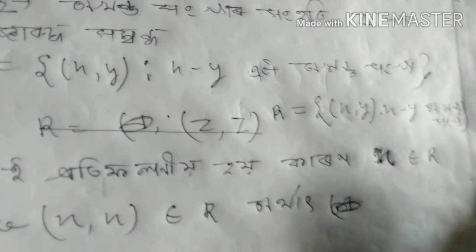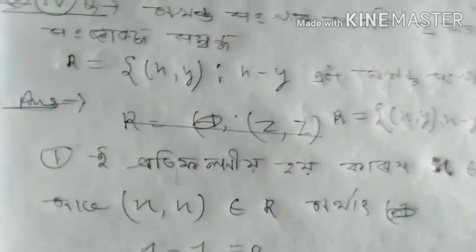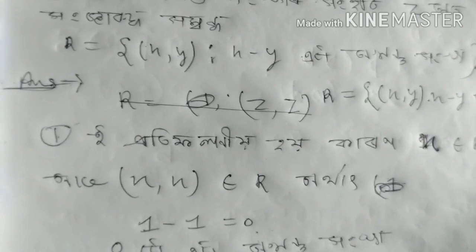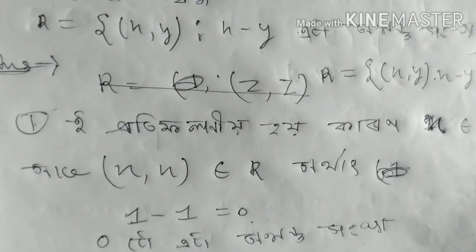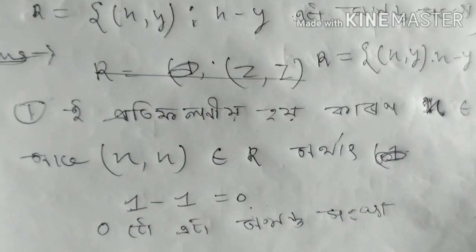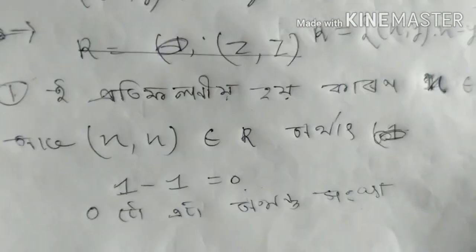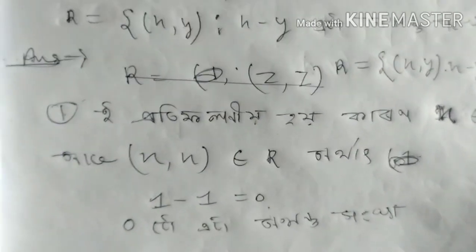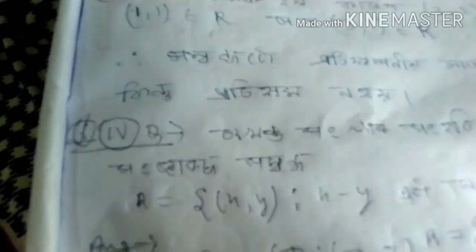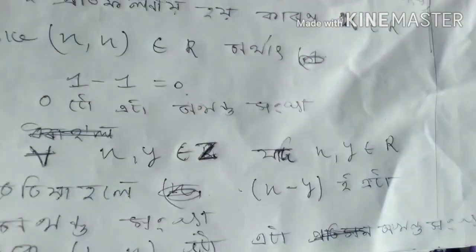If I look at 1, 1 is equal to minus 1. So I will write x, x belongs to r. So 1 minus 1 is equal to 0. Obviously, 2 minus 2 is equal to 0. So I will write x, x belongs to r. This is equal to 0. I will write x, y belongs to z. So x, y belongs to r.